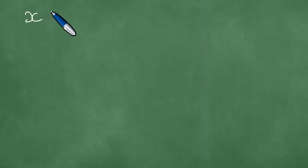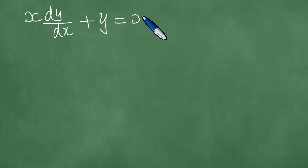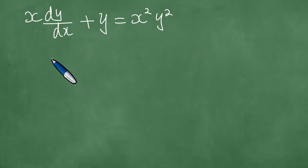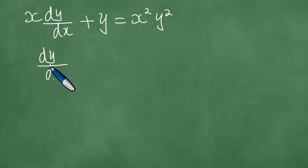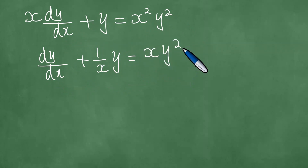First things first, we note that we have been given x dy/dx plus y, which equals x squared y squared. We divide through by x, getting dy/dx plus 1 over x times y, which equals x y squared.